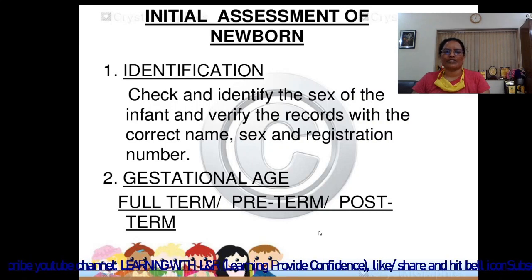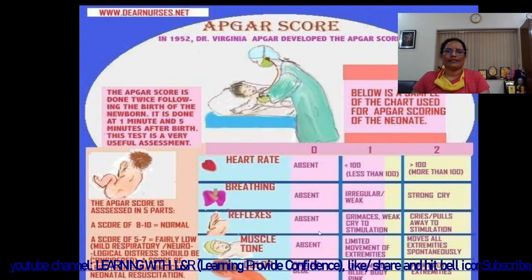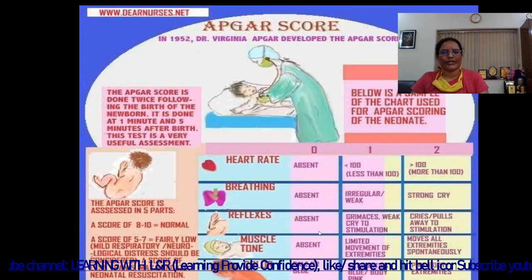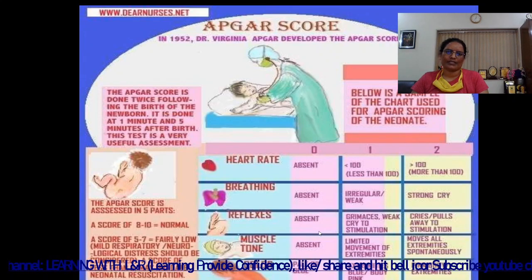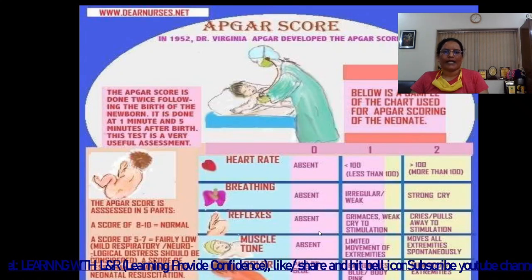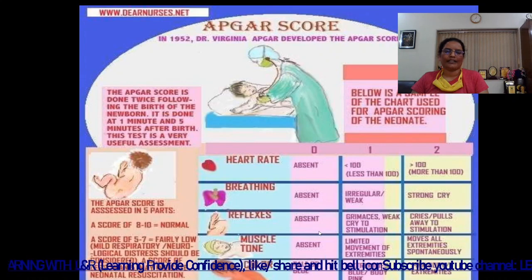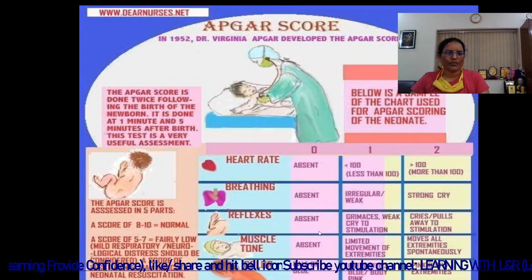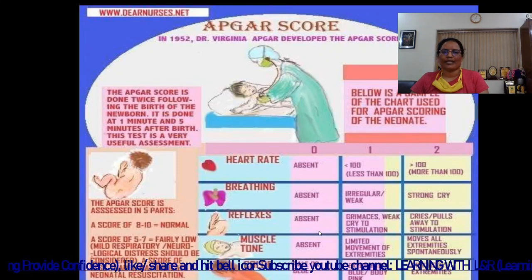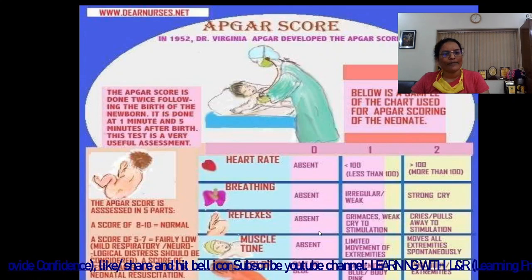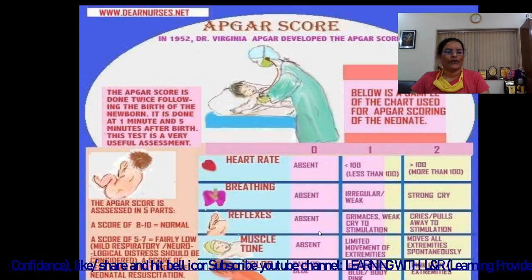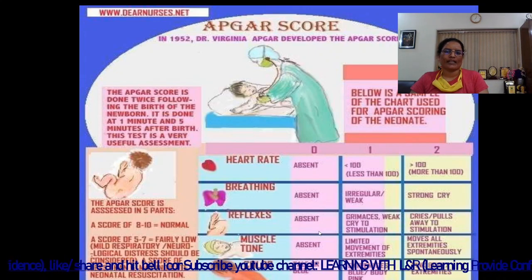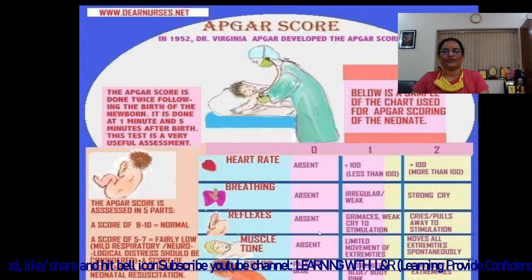Assess gestational age: full term, preterm, or post-term. Then assess the Apgar score, which is a very essential part of the assessment. The Apgar score was discovered by Dr. Virginia Apgar in the year 1952. The Apgar score is done twice following birth — first at one minute after birth, and second at five minutes after birth.